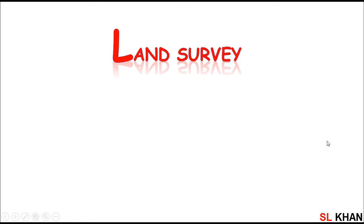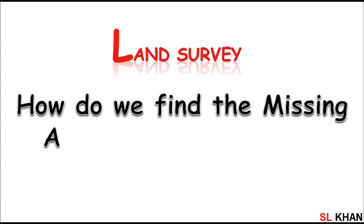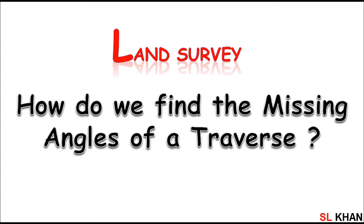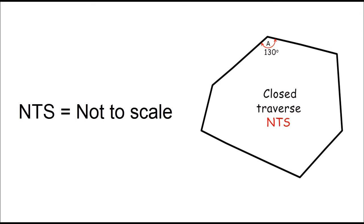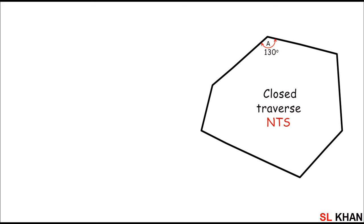My name is Isilhan and in this video we'll be learning the missing angles determination of a traverse. Suppose a closed traverse — the shown traverse is NTS, which means not to scale. Let's say some internal angles are known: angle A, angle B, C, D, and angle E which is 125 degrees.